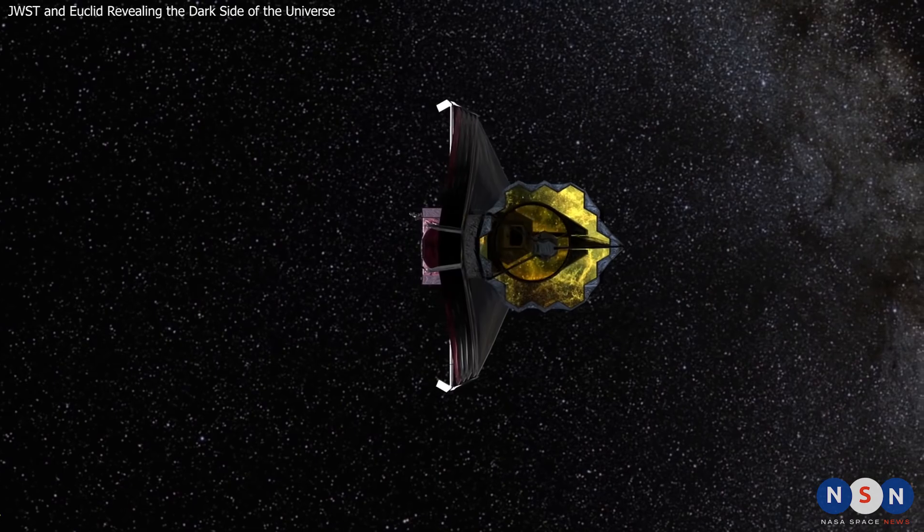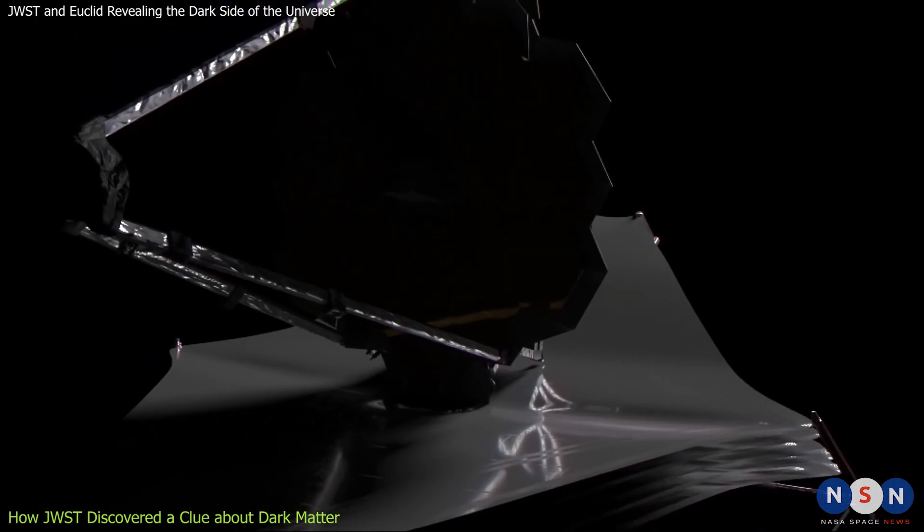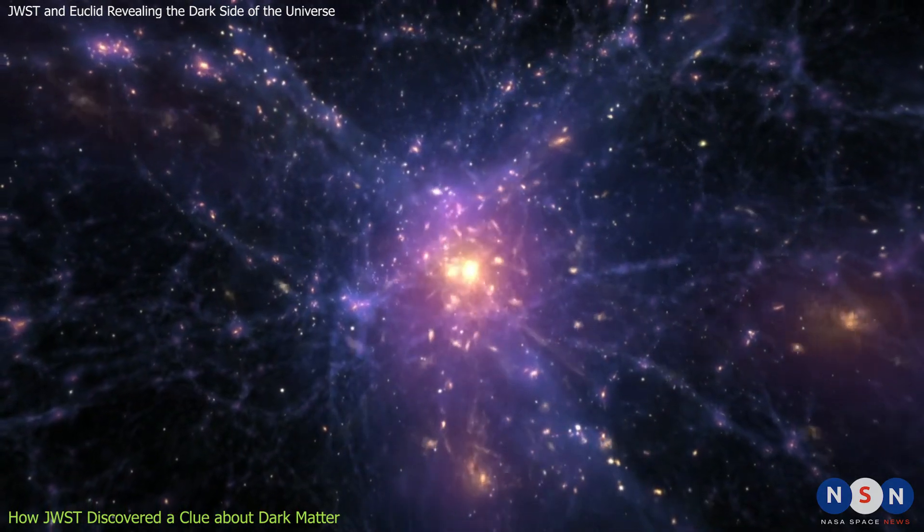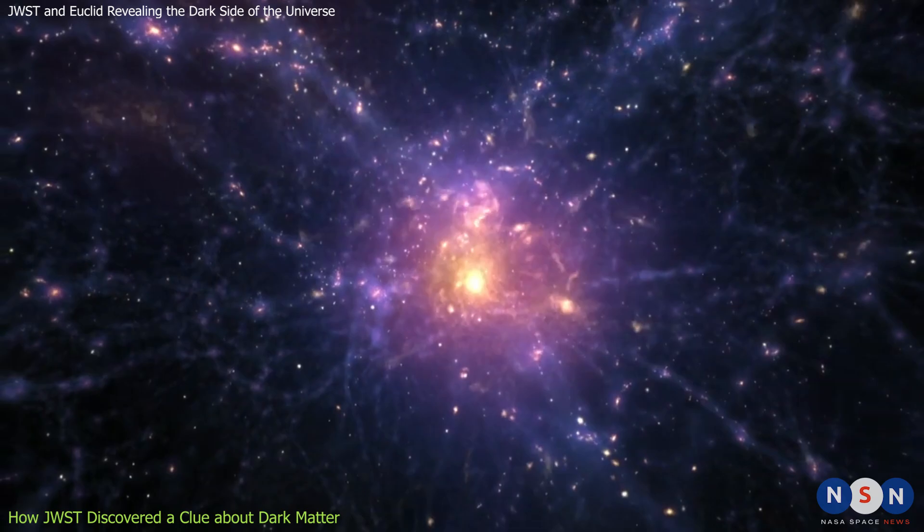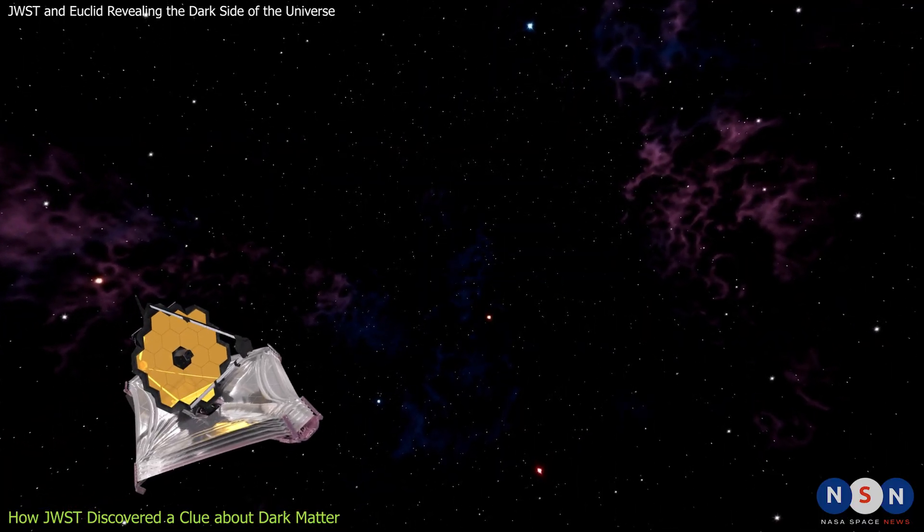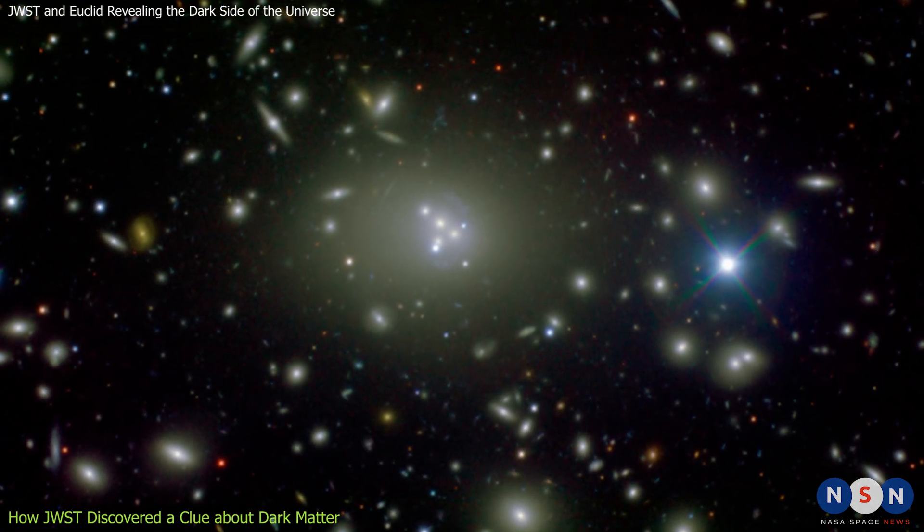One of these missions is the James Webb Space Telescope. And as you know, it is designed to study some of the most distant and ancient objects in the universe, such as the first stars and galaxies that formed after the Big Bang. But James can also help us learn more about dark matter. In fact, Webb has already made a remarkable discovery about dark matter in its first year of operation.